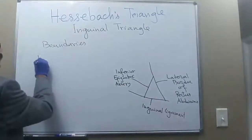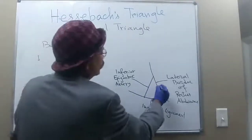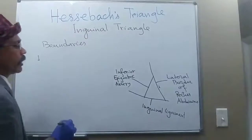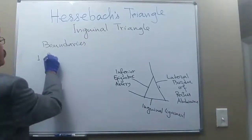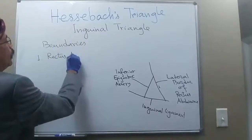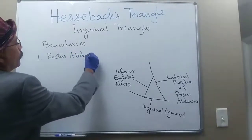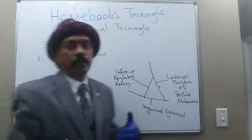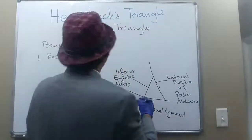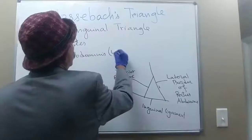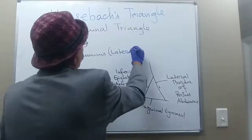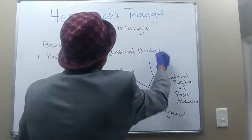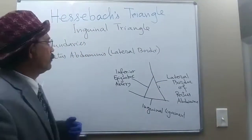Reviewing the boundaries of the inguinal triangle or Hesselbach's triangle: number one is the lateral border of the rectus abdominis muscle, which we see as the linea semilunaris — that is the lateral border of the rectus abdominis.